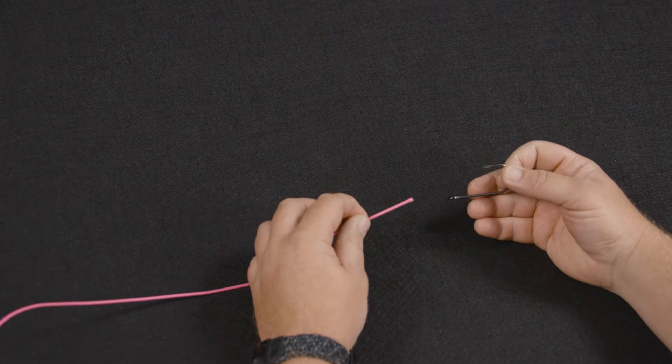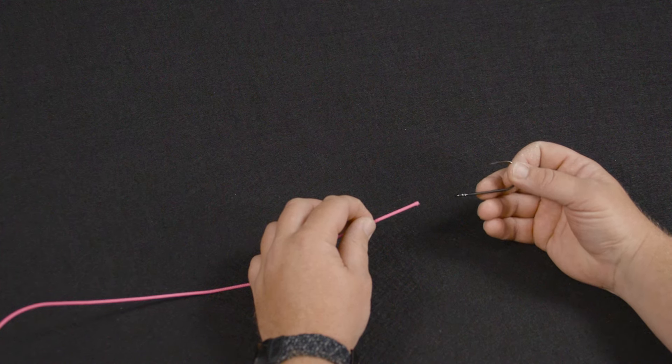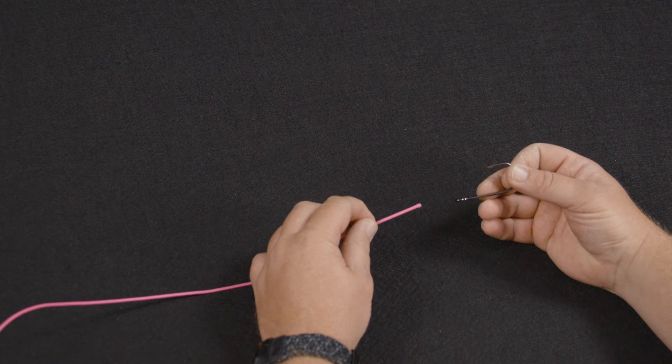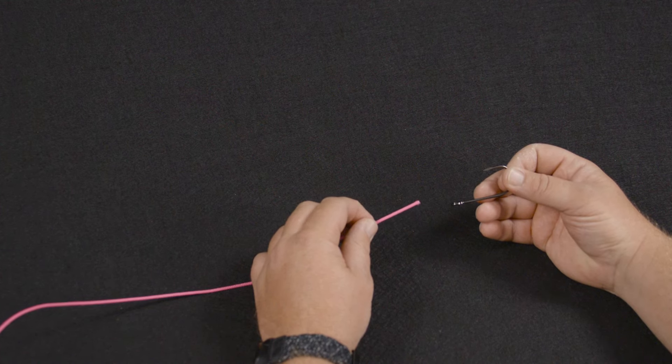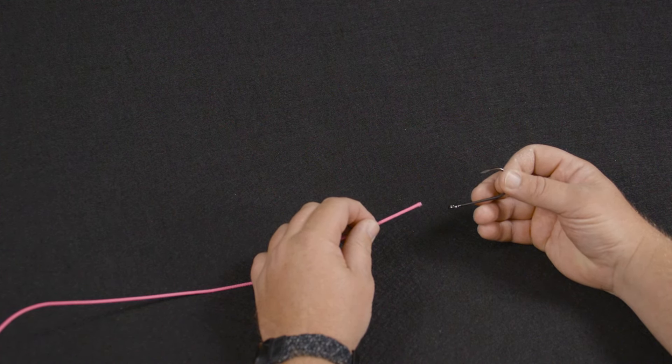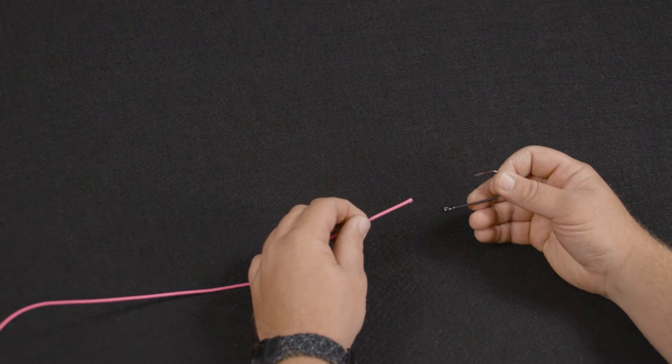I was trying to find a knot that was a lot easier to tie than the snell knots out there, which were pretty difficult to be honest with you. And I ended up coming up with a way to tie the uni knot to the shank of a straight shank hook.